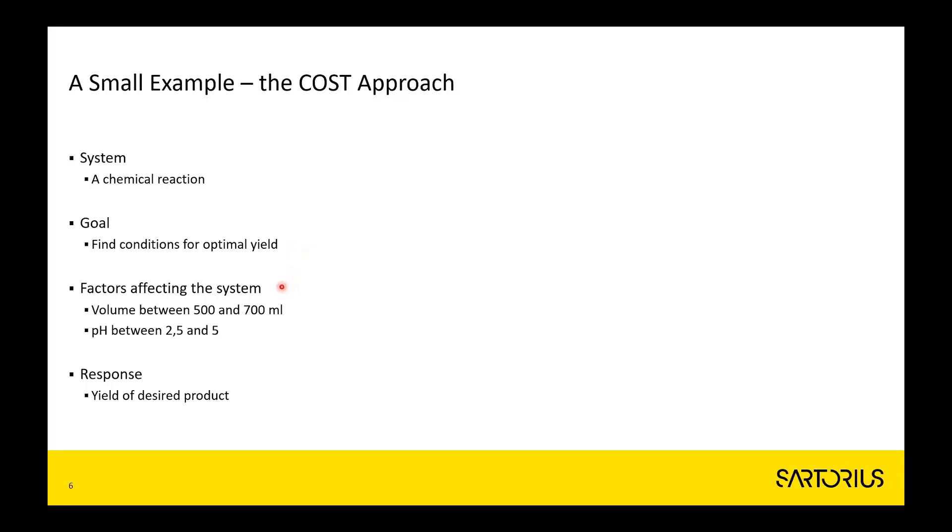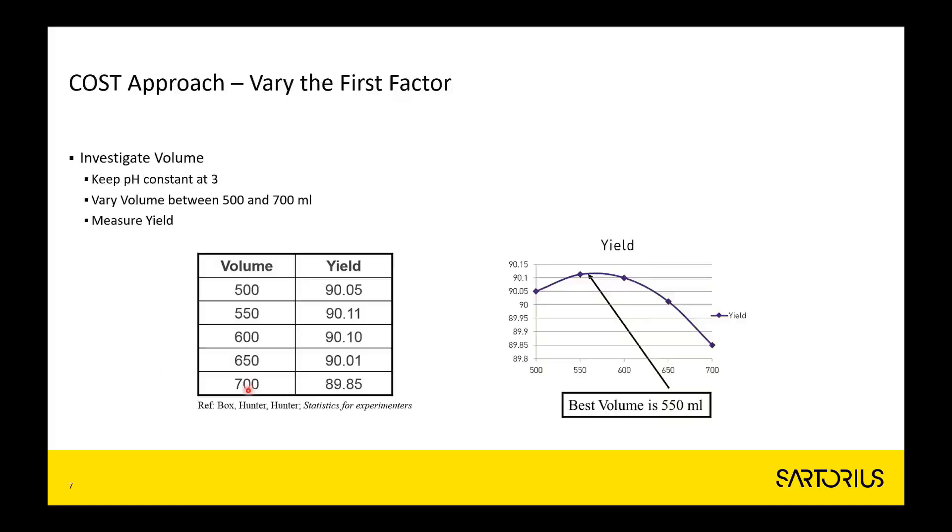The things that you can change we often call factors. In this case, it is the volume of the reaction container between 500 and 700 milliliters, and the pH in the solution which is varied between 2.5 and 5. What we measure, the result, is the yield of the desired product.